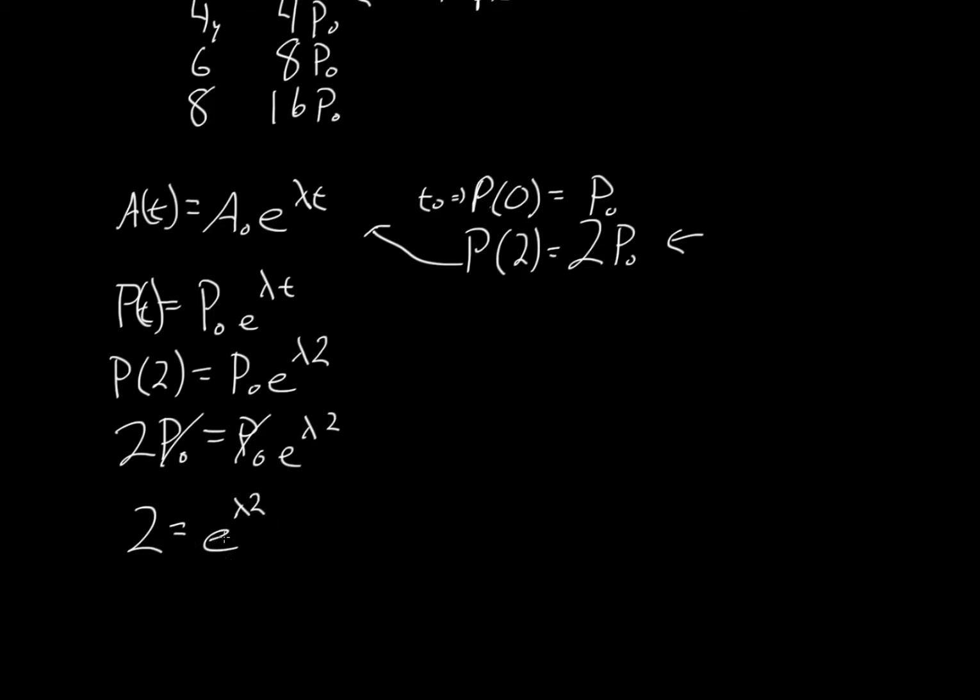How do we deal with this? Well, in order to bring down an exponential from the term e, or in any case, we'll actually use logarithm with that base. In this case, a logarithm that's based e is the natural log. So we're going to take the natural log of both sides. So the natural log of two equals the natural log of e to the 2 lambda.